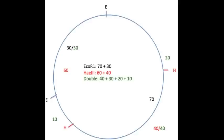20, 40, 10, and 30 KB fragments from the double digest. And our HaeIII single digest fragments are 40 and 60 KB in size.